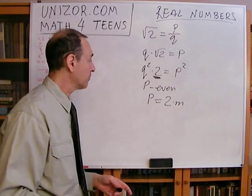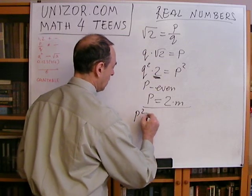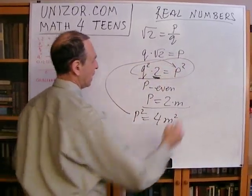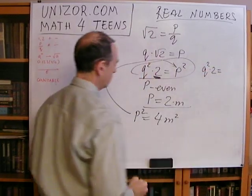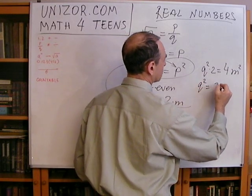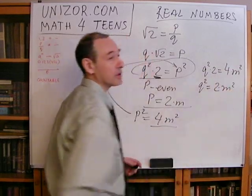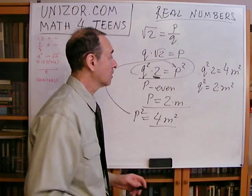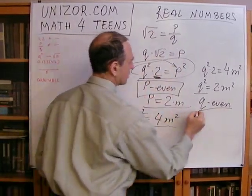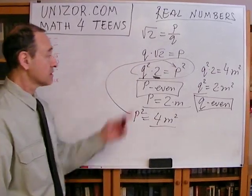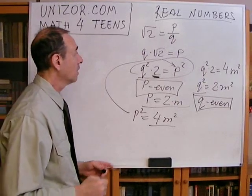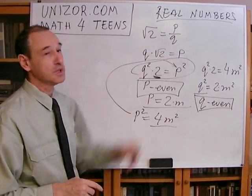Going back and substituting, we get q squared times two equals p squared, which is 4n squared. Dividing both sides by two gives q squared equals 2n squared. Since all numbers are integers, this means q squared is even, and therefore q is even. Now compare: p is even and q is even. This means two is a common factor — both are even, so we can reduce this fraction. But we assumed from the very beginning that we cannot. That's the contradiction. So we have proved that the square root of two cannot be a rational number.